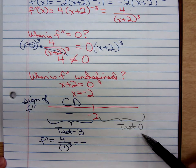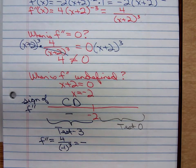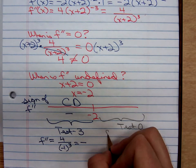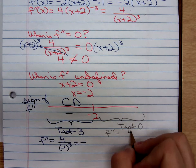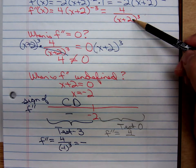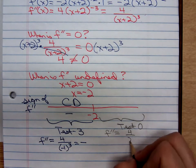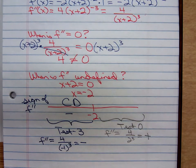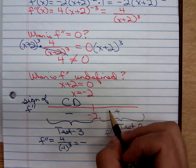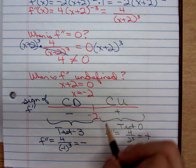At 0, f double prime is equal to 4 over 0 plus 2. That is a 2 cubed. That is positive. So to the right of negative 2, the graph is concave upward.